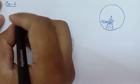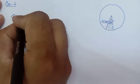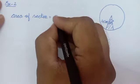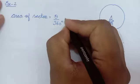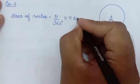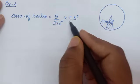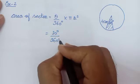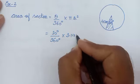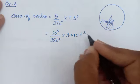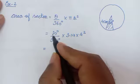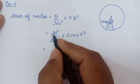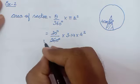Area of sector का formula पहले लिखना है, that is theta by 360 degree into pi r square. R की value और pi की value 3.14 दी गई है. So 30 degree upon 360 degree into 3.14 into 4 square. अगर cm में दिया है तो cm में निकाल लें।